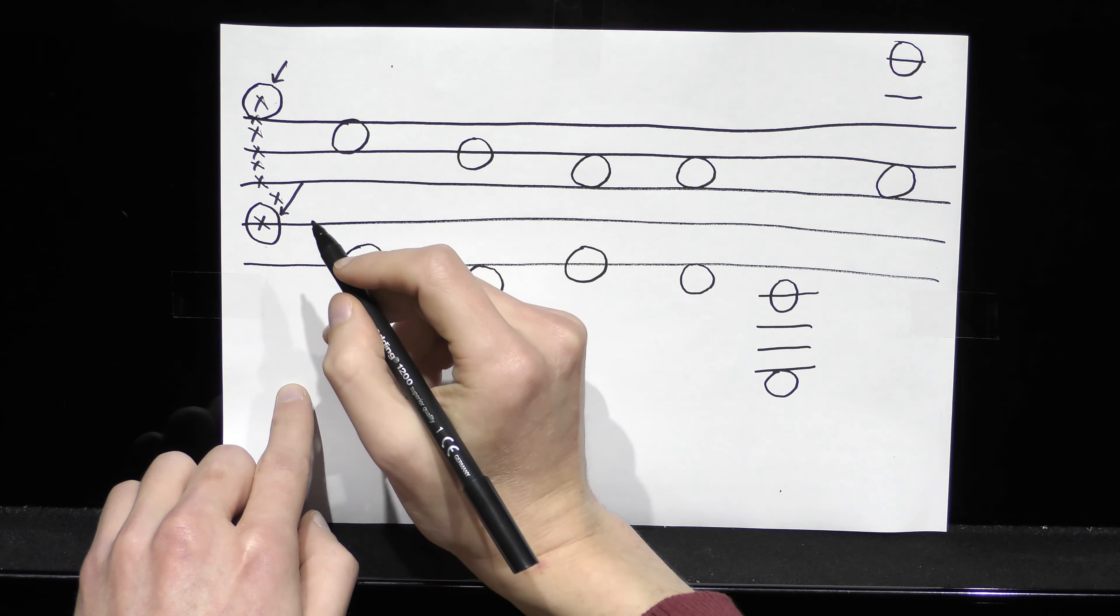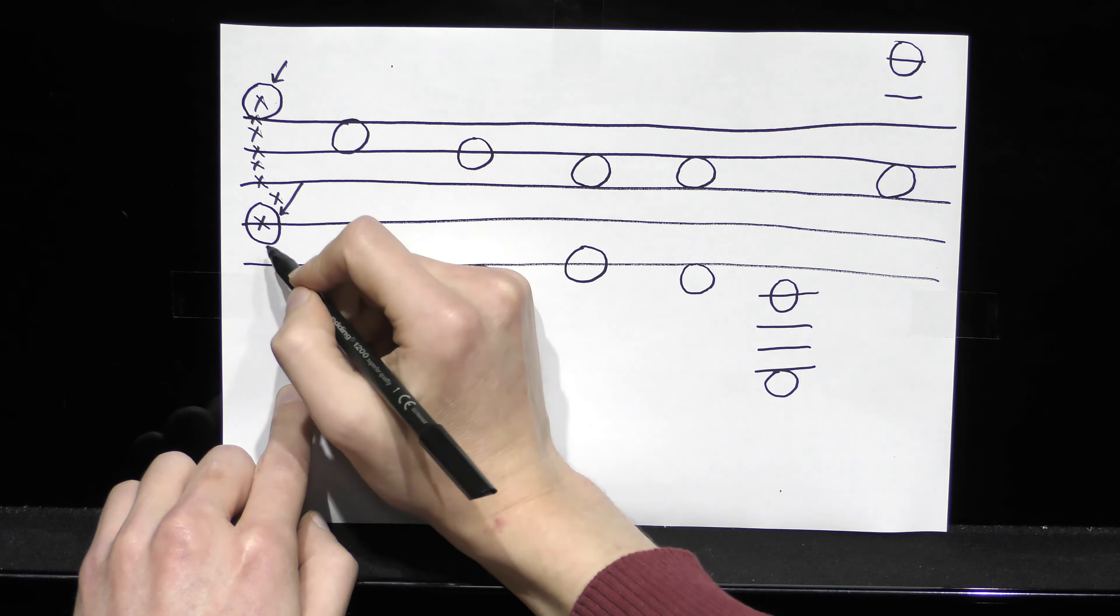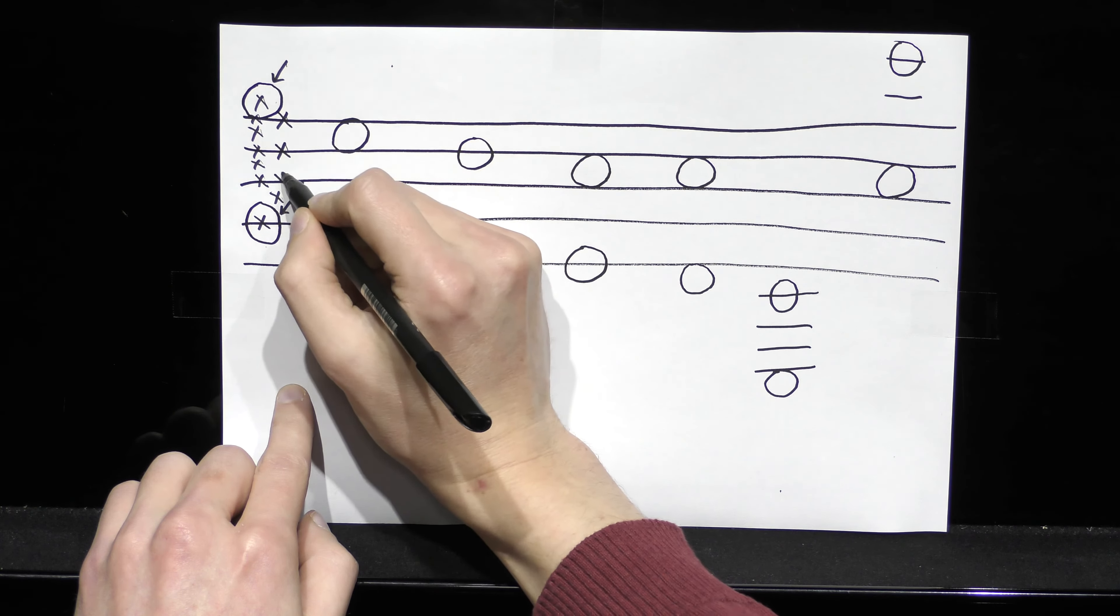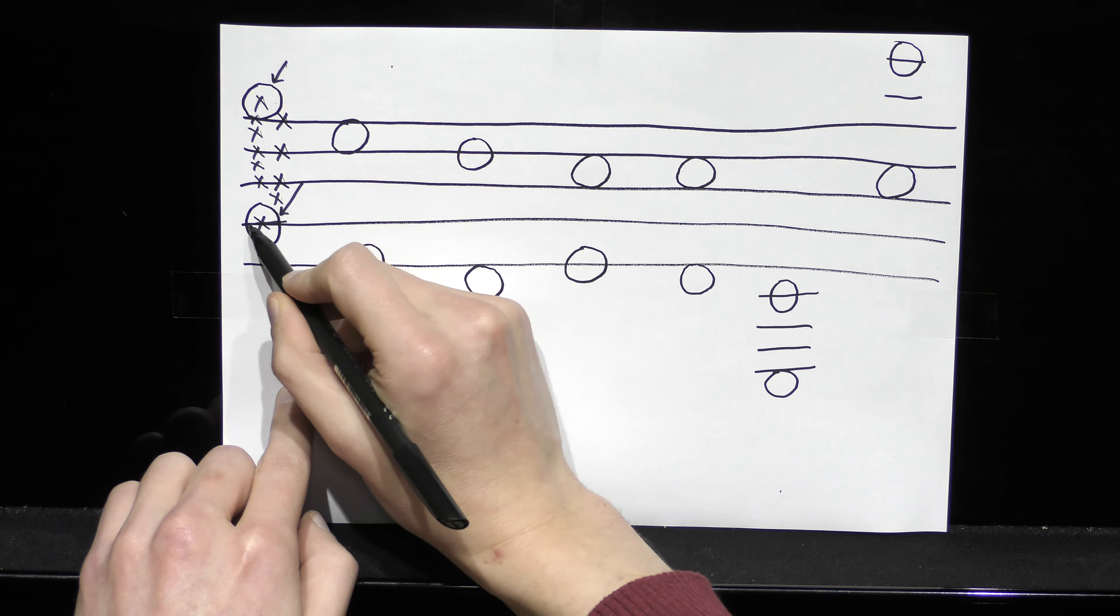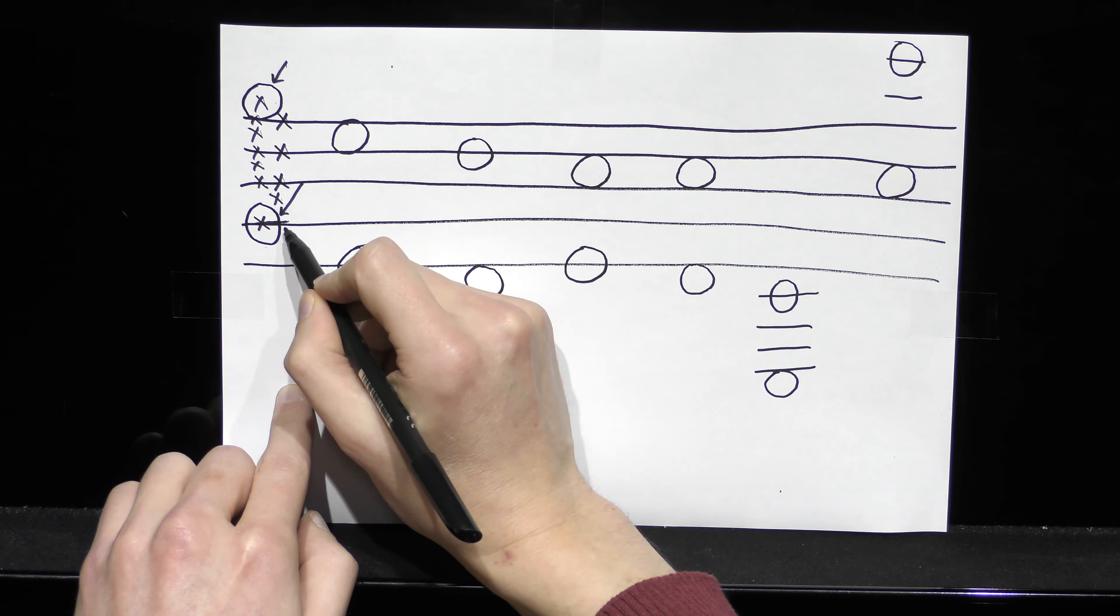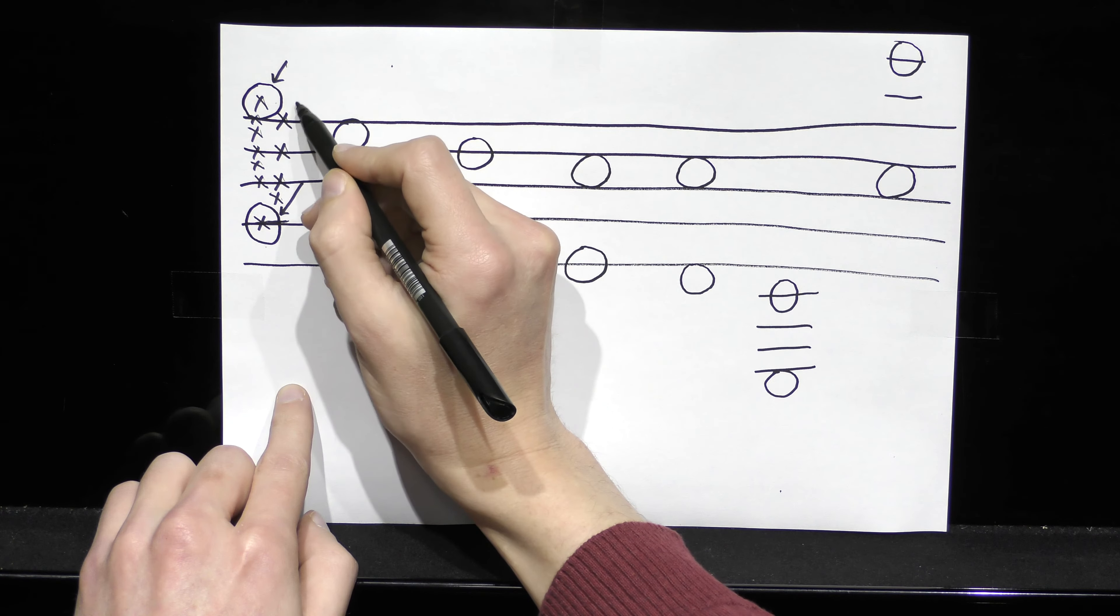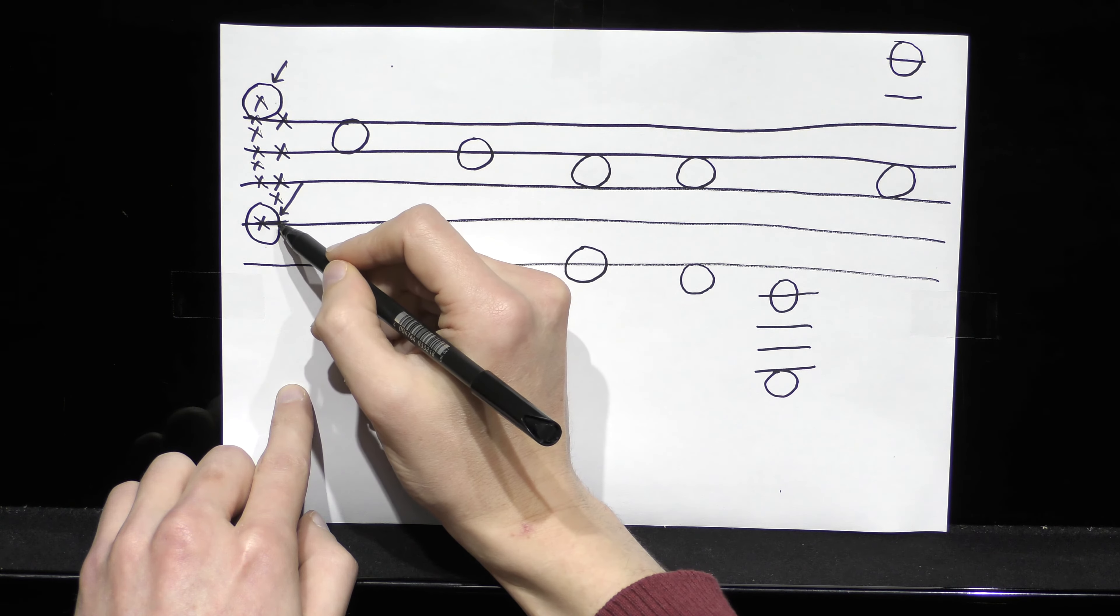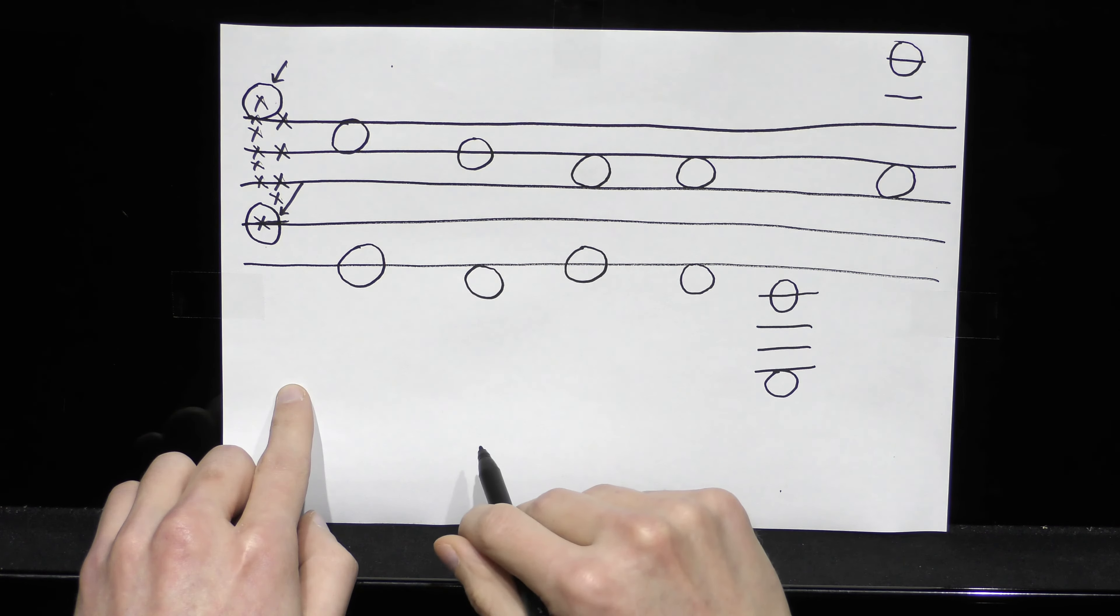The other is, if we just count the number of lines in between these two notes, so one, two, three, so I'm not counting the line that this note is on, right, just the ones that are actually between those two notes, then I come up with an answer of three. So if I have notes on a line and a space, and I have three lines between, I'll always have an octave.